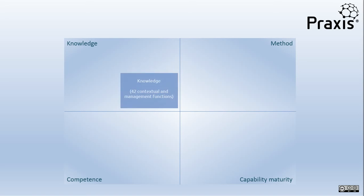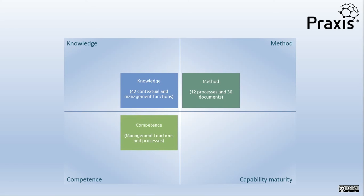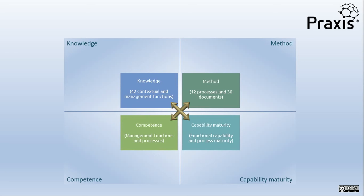The result is a Knowledge section that contains contextual and managerial functions that collectively make up the discipline of project management. A Method section that contains process and documentation descriptions for each phase of the project, programme and portfolio life cycles. A Competence section that describes the knowledge and performance criteria required for someone to perform the functions and processes. And a Capability Maturity section that describes how an organisation can develop its culture and infrastructure leading to consistent project delivery. All these sections have been written to be fully integrated and intuitively linked – one terminology, one structure and one style of presentation.